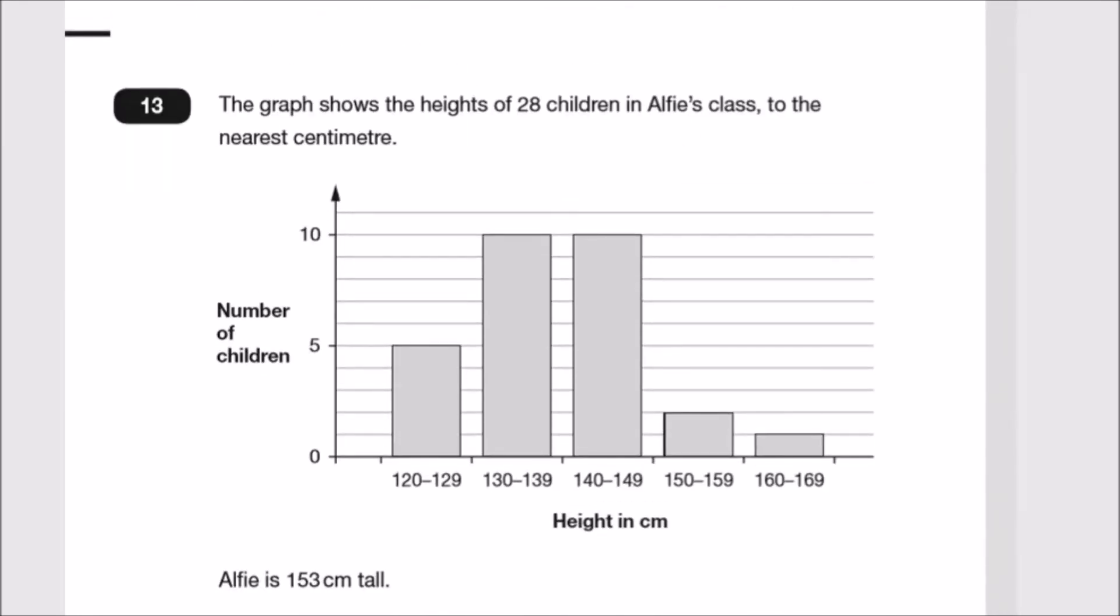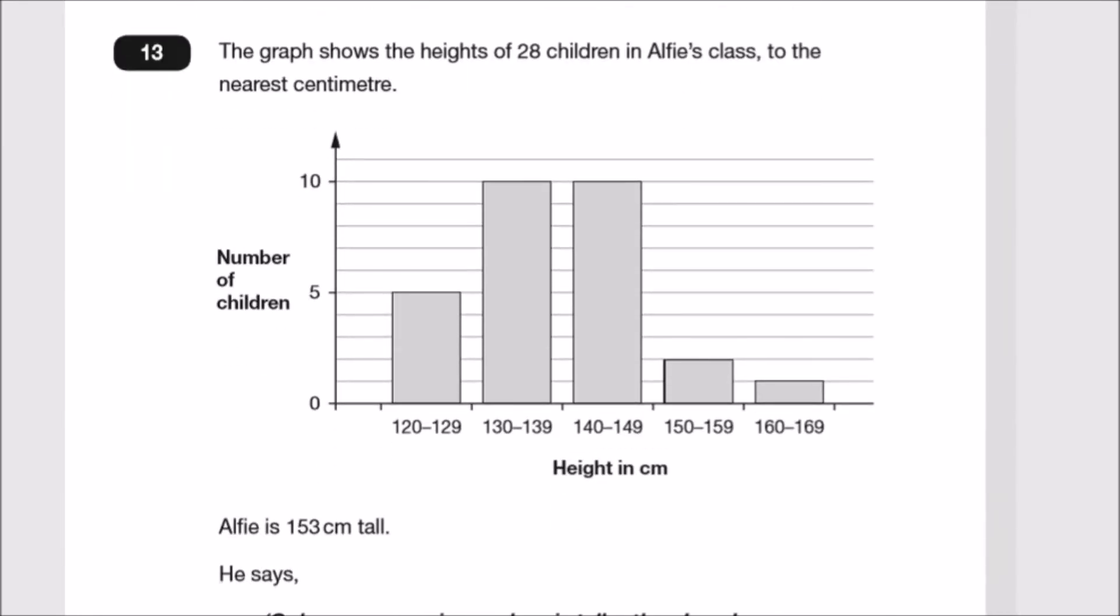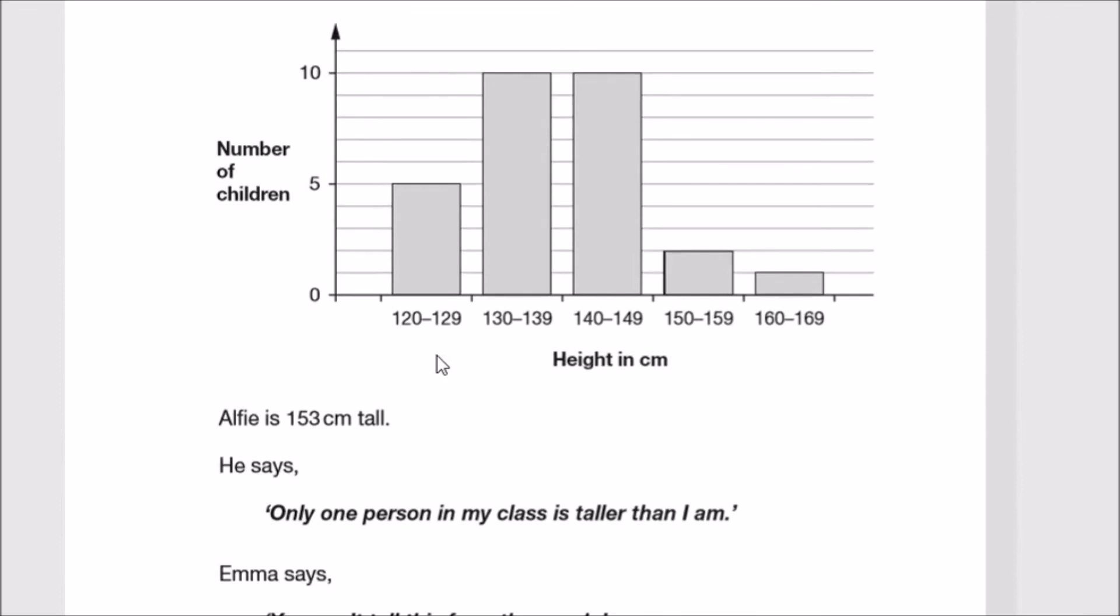Number 13: This question is about explaining histograms or bar graphs. The graph shows the heights of 28 children in Alfie's class to the nearest centimeter. Children between these heights: 5 up to here, then 10, then 10 again. This one goes up to 2 blocks and this is 1. All of this totals 28 children.